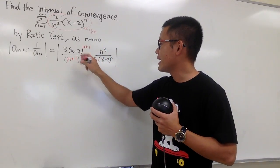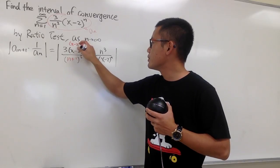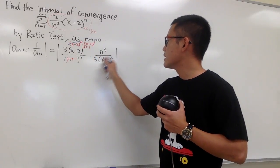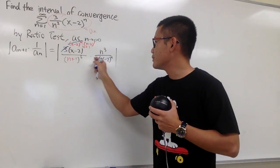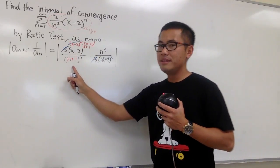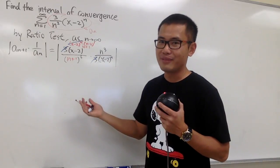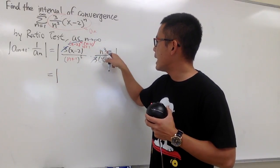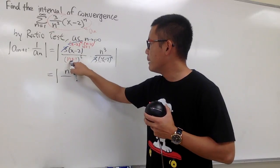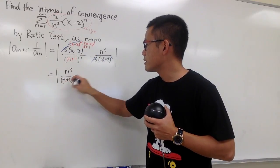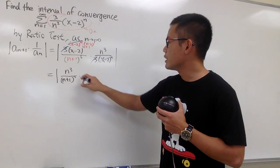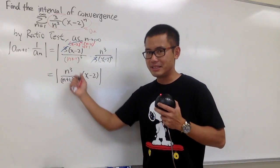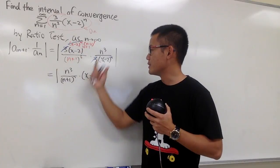Simplify: this right here is just (x minus 2) to the n times (x minus 2) to the first power, and that (x minus 2)^n can be cancelled. Likewise, this 3 and that 3 can be cancelled. So after the algebra, we will first have the absolute value, and on the top we have n to the third power, over (n+1) to the third power. And then we multiply by (x minus 2) on the side. You should always put the n-th term first, and then the factor with x at the end.